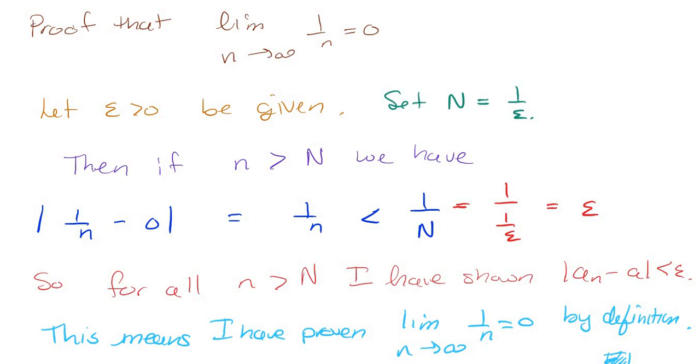If I take this denominator and make it smaller, the whole fraction gets bigger. N is the bottom is smaller than capital N. So I can do this. But N is one over epsilon because I said it that way, which is really epsilon.